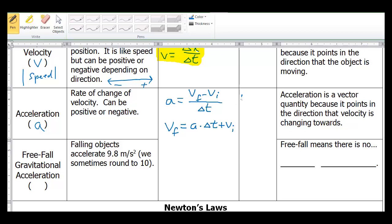The units for acceleration in the SI system is meters per second squared. The equivalent in the English system would be feet per second squared. We can also have kilometers per hour per second or miles per hour per second. Acceleration is also a vector quantity, like velocity, because it points in the direction that velocity is changing toward. It is not the direction the object is moving, but the direction that its velocity is changing towards.